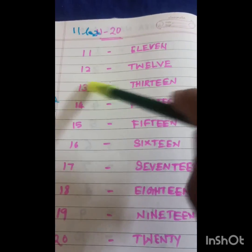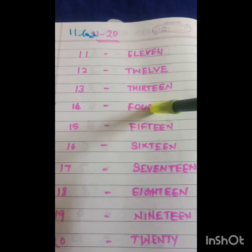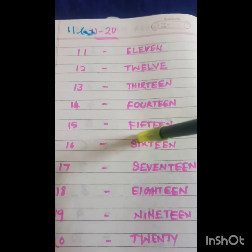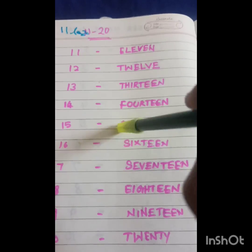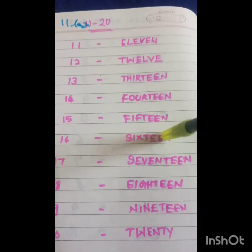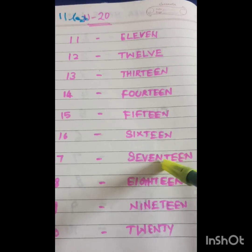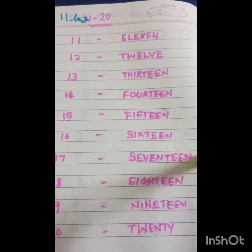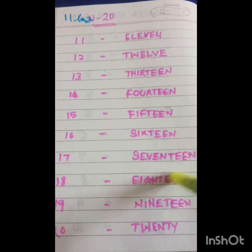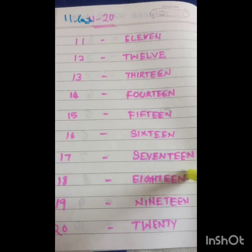11, 12, 13, 14 — F-O-U-R-T-E-E-N — 14. 15 — F-I-F-T-E-E-N — 15. 16 — S-I-X-T-E-E-N — 16. 17 — S-E-V-E-N-T-E-E-N — 17. 18 — E-I-G-H-T-E-E-N — 18.